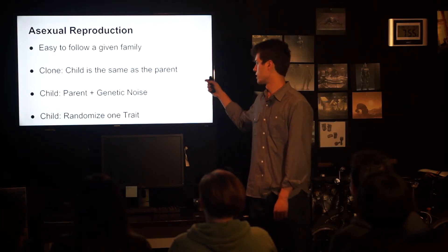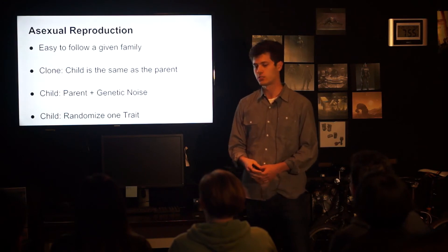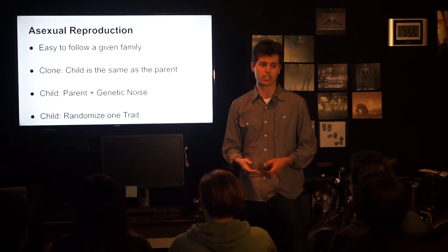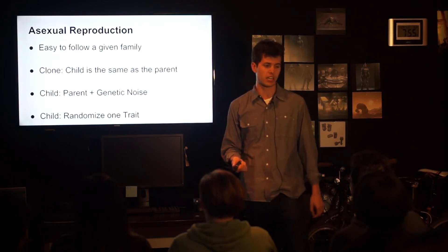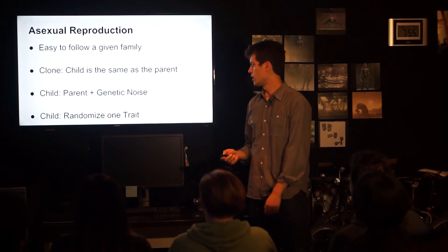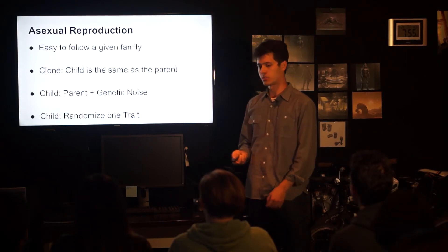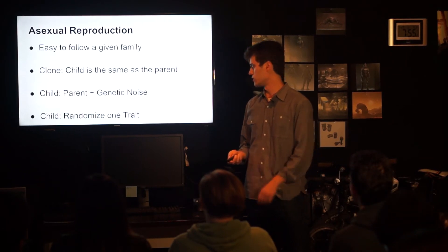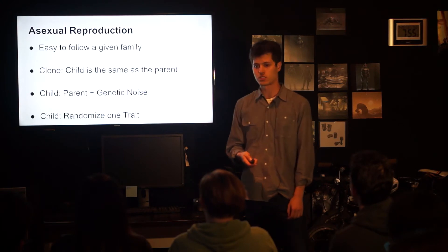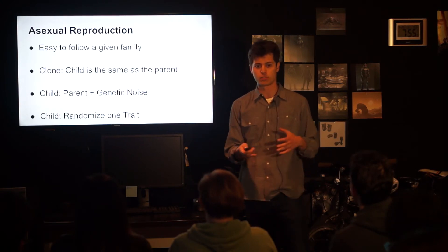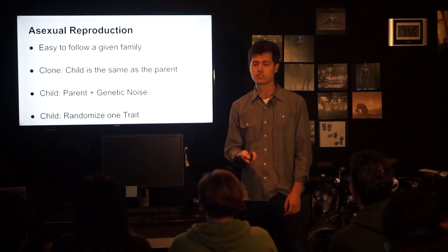The ways I did it were: I did something called a clone, which is just repeating the parent because maybe I got lucky and randomly picked a good one the first time. A child is a parent with a little noise. Or I have another child type where I keep all the traits except one and just completely randomize it.